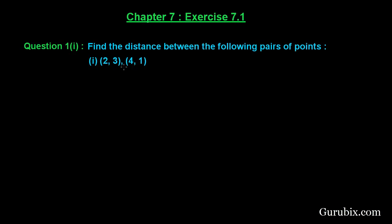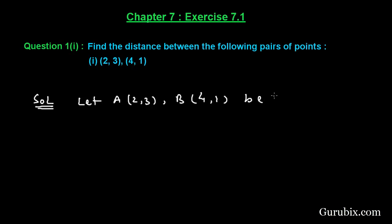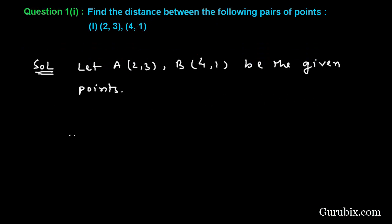Let A(2, 3) and B(4, 1) be the given points. Therefore we shall apply the distance formula, that is AB equals square root of (x2 minus x1) squared plus (y2 minus y1) squared.